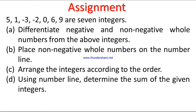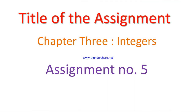Let's see the assignment. The given integers are: 5, 1, minus 3, minus 2, 0, 6, 9. Part A: differentiate negative and non-negative whole numbers from the above integers. Part B: place non-negative whole numbers on the number line. Part C: arrange the integers in order. Part D: using the number line, determine the sum of the given integers. Title: Chapter 3 Integers, Assignment Number 5.